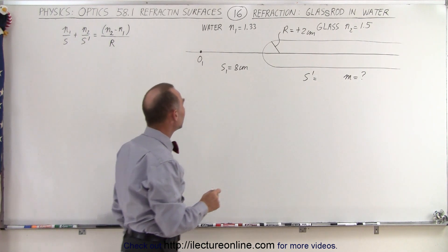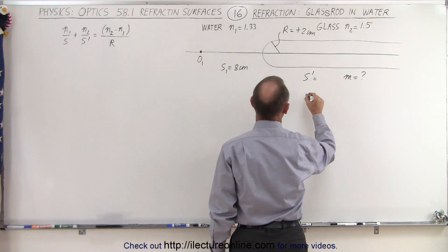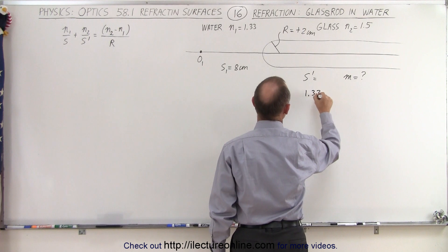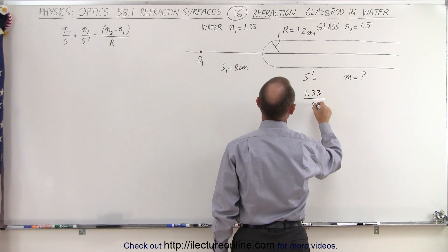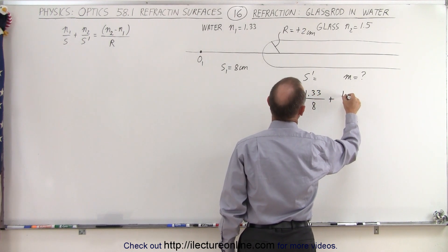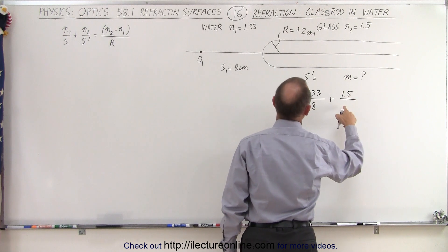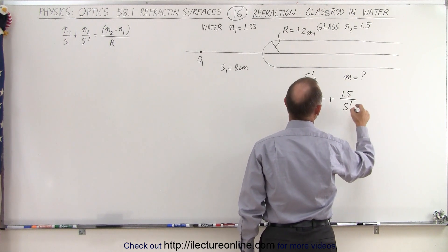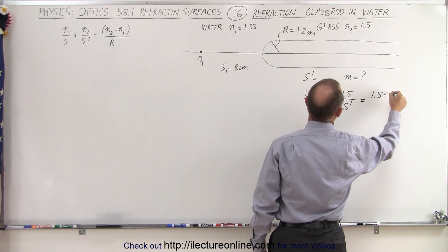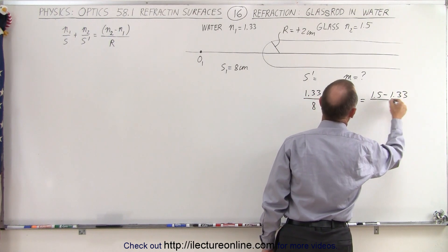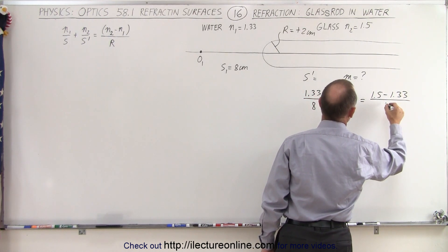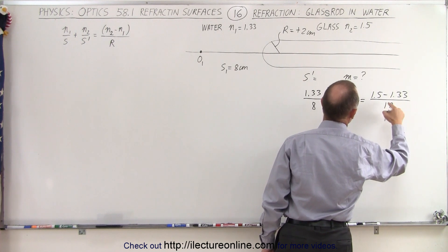Again we use the same equation: n1 over s. In this case it's 1.33 over s, which is 8, plus 1.5 over s prime, which is what we're looking for, is equal to n2 minus n1 divided by the radius of curvature, which in this case is going to be 2.